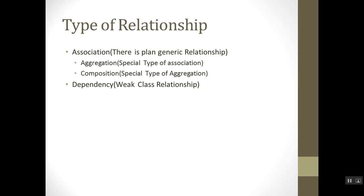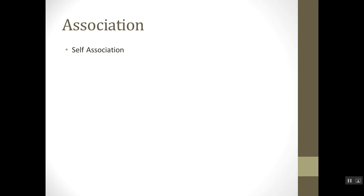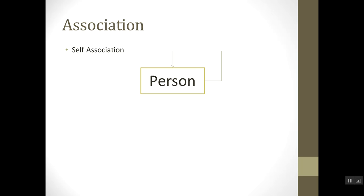Other types of relationships include generalization and realization. Association is further divided into different types. Self-association is an association with itself — for example, a person is associated with itself. This is called self-association.